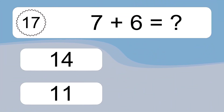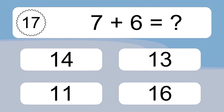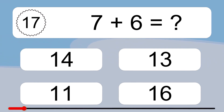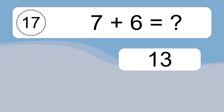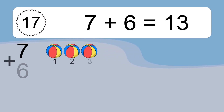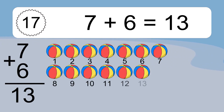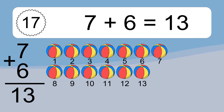7 plus 6 equals what? 7 plus 6 equals 13. Let's count it. 1, 2, 3, 4, 5, 6, 7, 8, 9, 10, 11, 12, 13.